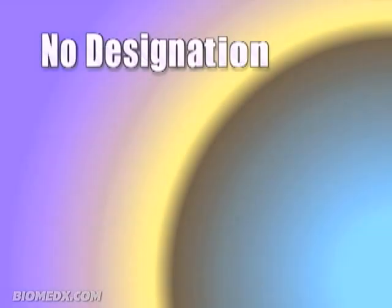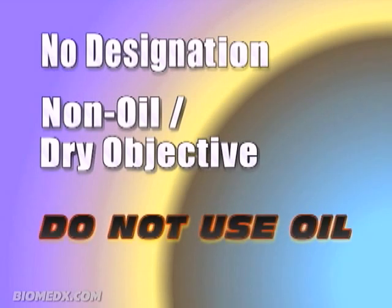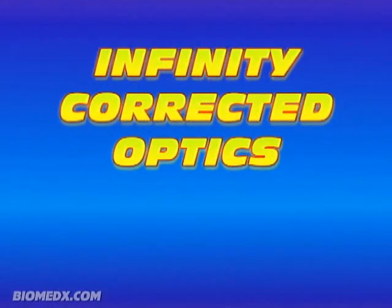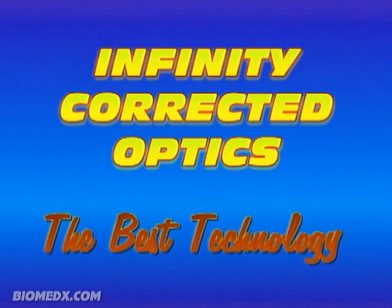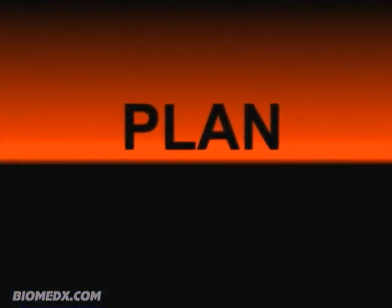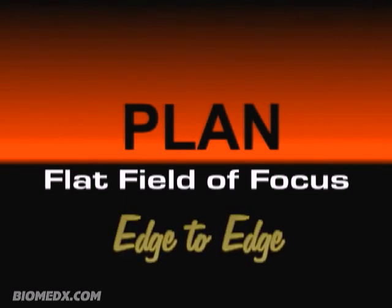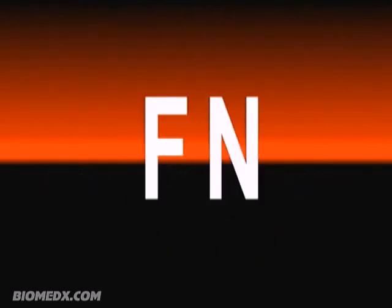If there's no designation on the objective that it's an oil objective, then it would likely be a non-oil or dry objective, in which case using oil would ruin the lens. The infinity symbol means the lens is infinity corrected and is the latest microscope technology. The word 'plan' designates a higher quality objective that gives a flat, even focus across the field of view, which is designated by the field number, or FN, which is also printed on the objective barrel.